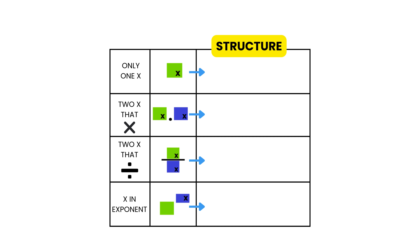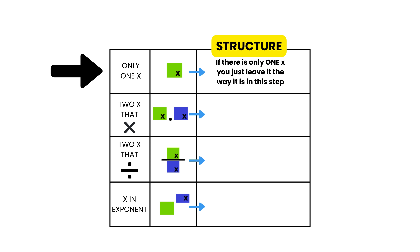Let's break down each of the four types to see which structure we're going to use for each. What's super important to remember is that the structure is just a fixed pattern that we follow — these patterns don't change, they always stay the same, so you need to learn them off by heart. For the first type where we have just a single x, there's no structure we need to set up — it stays exactly the way it is. For the second, third, and fourth types, we have structures that we need to set up before we can move on to step three.